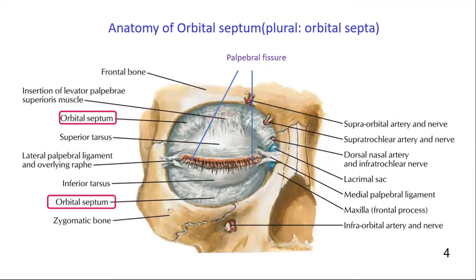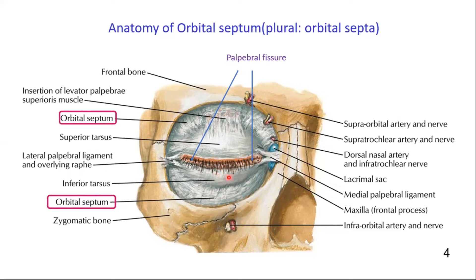The orbital septum is a thin sheet of fibrous tissue that originates from the orbital rim periosteum, and blends with the tendon of the levator palpebrae superioris muscle superiorly, and inserts into the tarsal plate inferiorly.